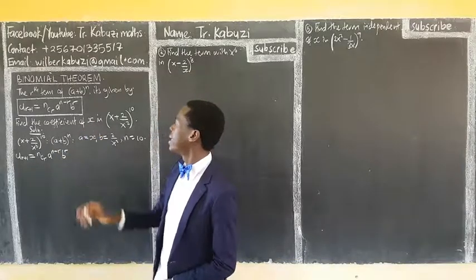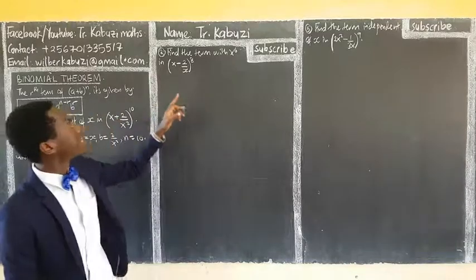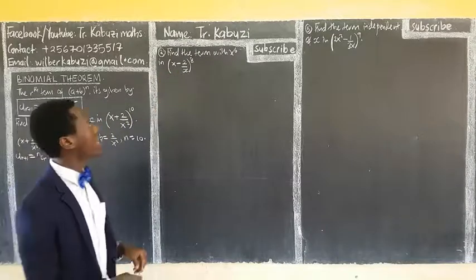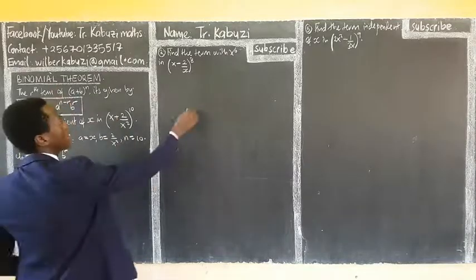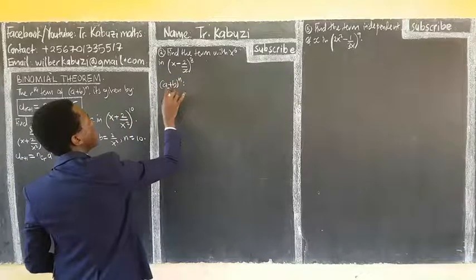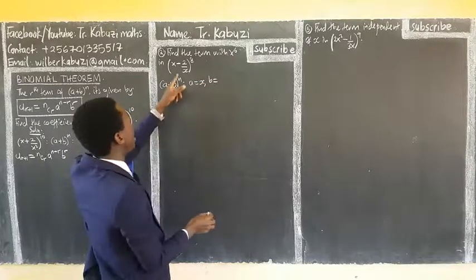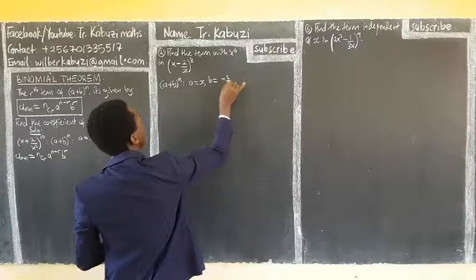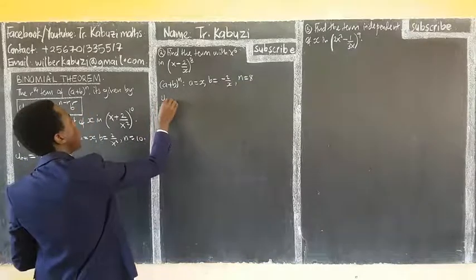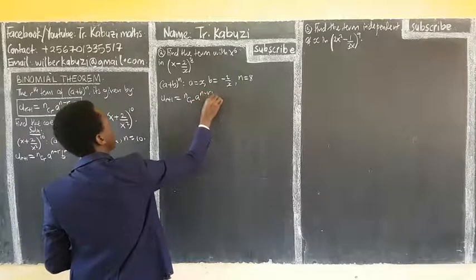Find the term with x^6. Comparing with (a + b)^n, we have a = x, b = -2/x, and n = 8. Now we put into the formula U(r+1) = C(n,r) · a^(n-r) · b^r, so our term involves (-2/x)^r.